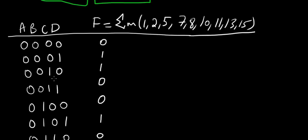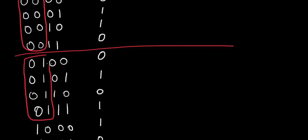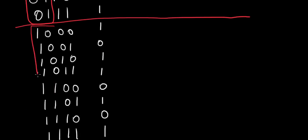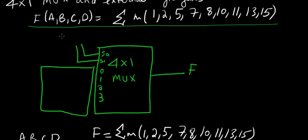Now we can easily see that for selection lines, we take A and B. So A,B = 0,0 selects the first input, A,B = 0,1 selects the second input, A,B = 1,0 selects the third input, and A,B = 1,1 selects the final input 3. So we can easily say the selection lines are A and B.